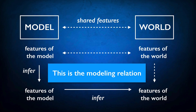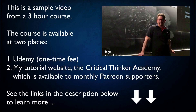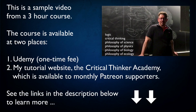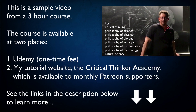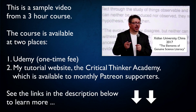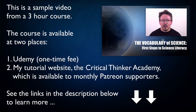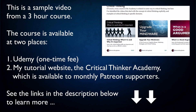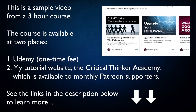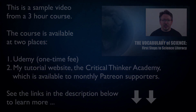Now if we jump back to our mapping diagram and just substitute the word 'model' for 'map' and 'world' for 'city', then we have a general description of what it means for something to be a model. A model in science is something that plays this role in our reasoning about the world.